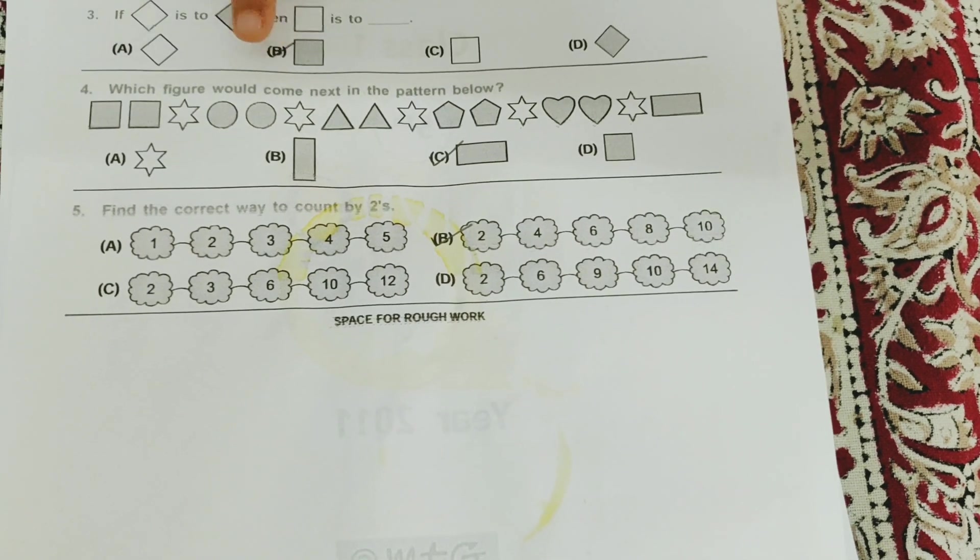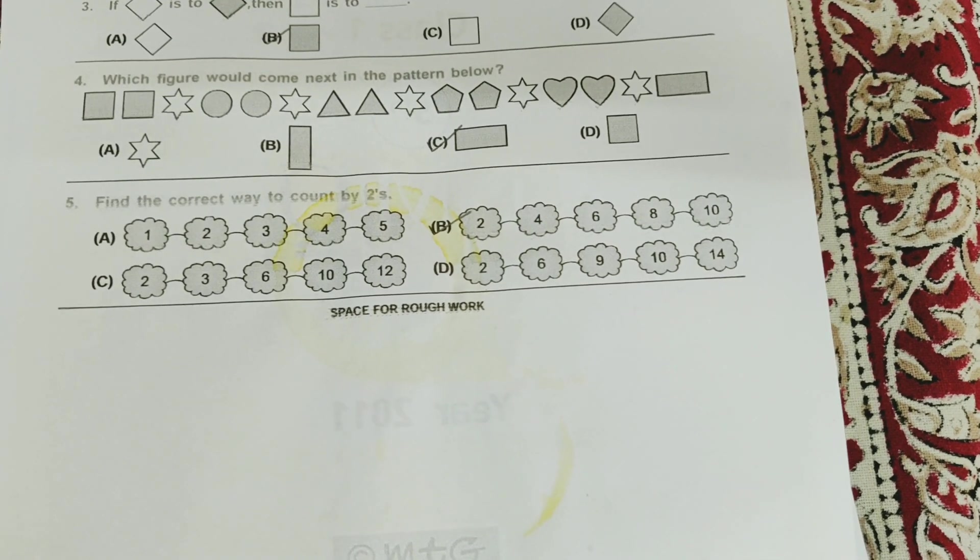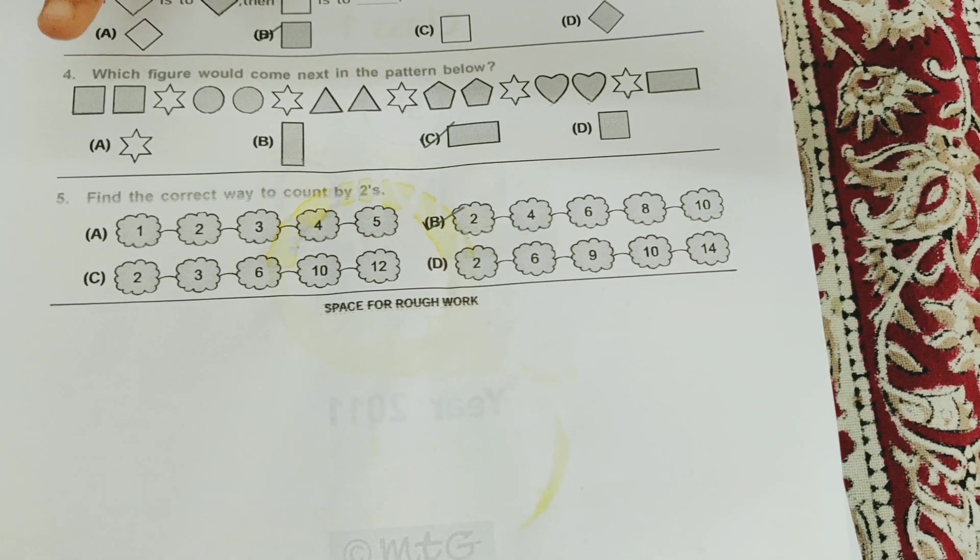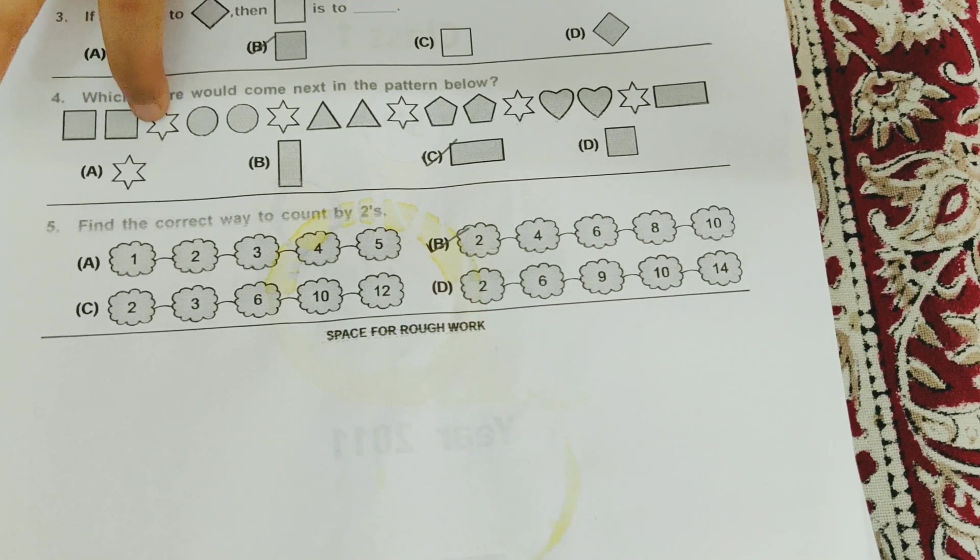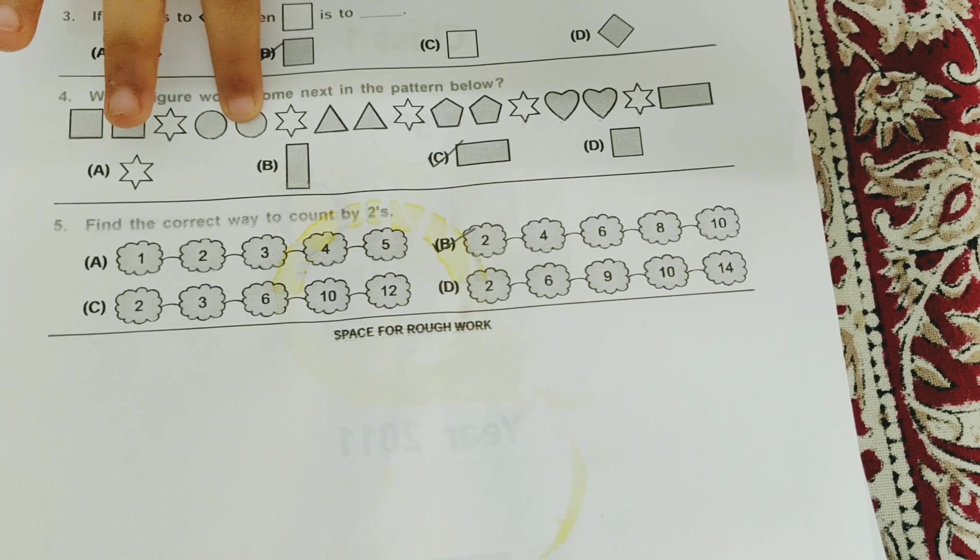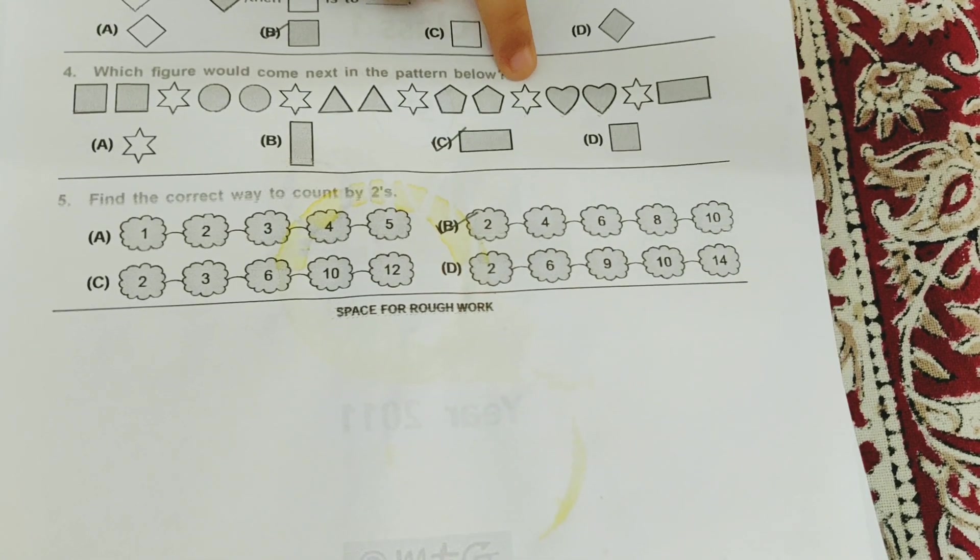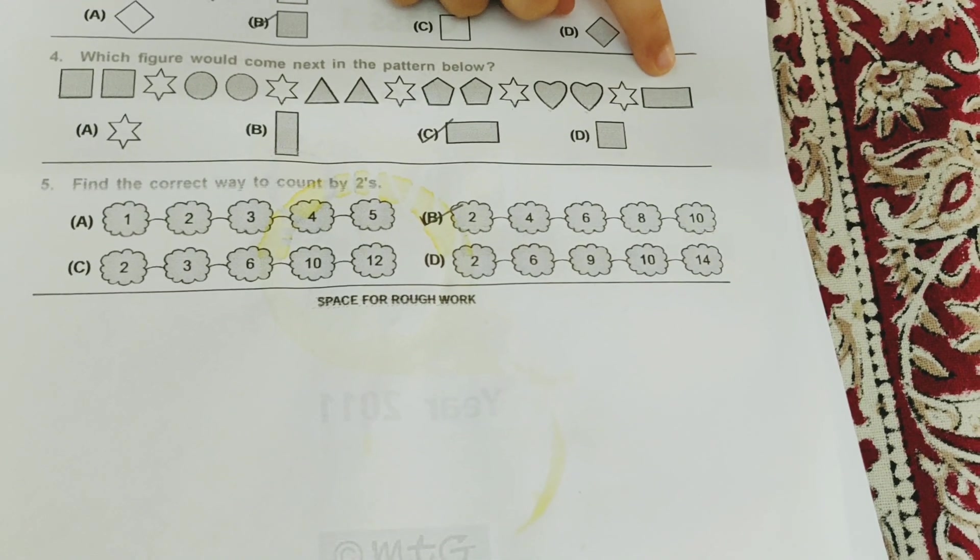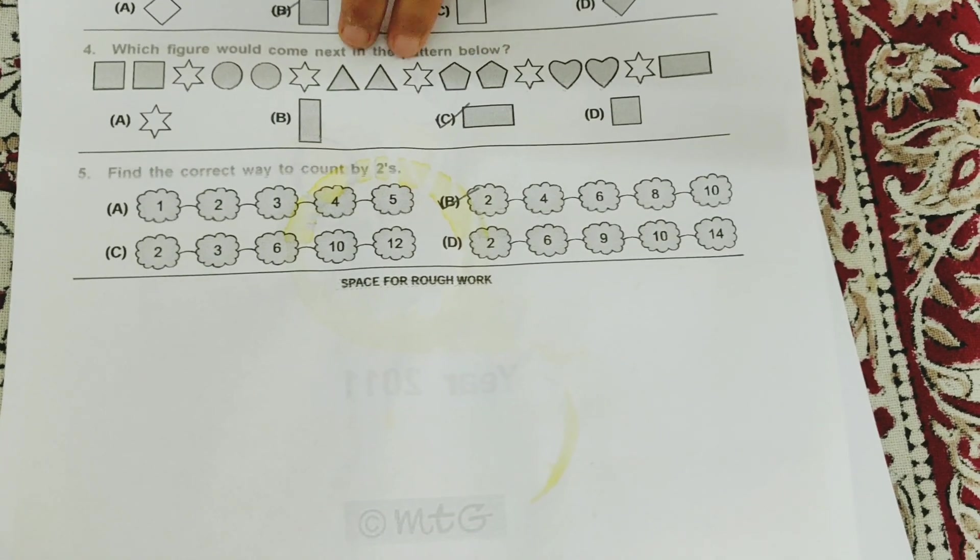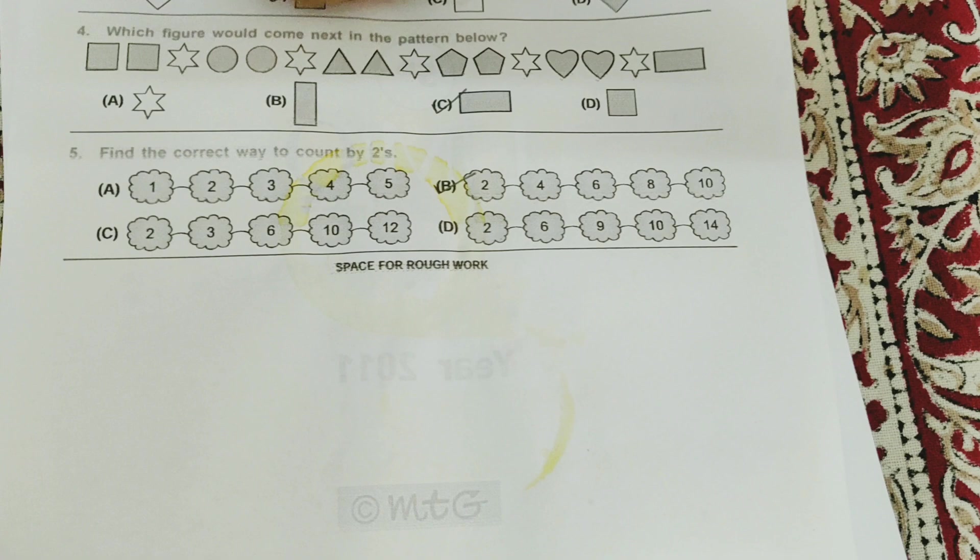So let's see. Which figure would come next in the pattern below? So it's, let's see, square square star, circle circle star, triangle triangle star, pentagon pentagon star, heart heart star. So here's just one rectangle, and in all of this there's two, two. So what we need to add is just one more rectangle. Easy, and it's C bit.